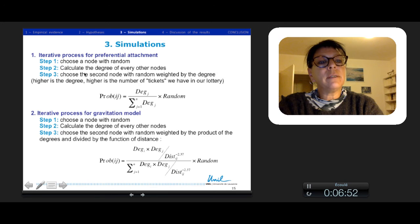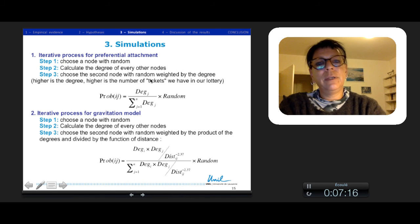We processed in different steps. Step one, a node chooses a node with random for preferential attachment. Then we calculate the degree of every other node. Step three, we choose a second node with random weighted by the degree. Higher is the degree, higher is the number of tickets in our lottery to give probability to have a new link. The probability is proportional to the degree with competition with all other degrees, multiplied by a random effect.